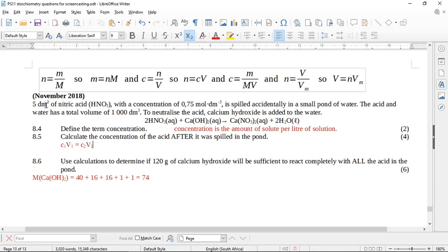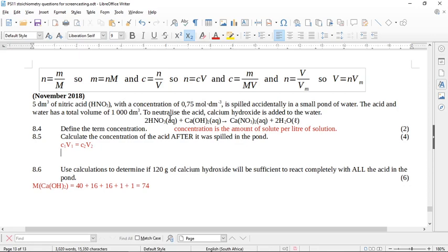The number of moles of nitric acid that you spilt in the pond is the same amount at the beginning and at the end with the two different volumes. So I like using this formula. It's nice and easy.